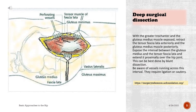Deep surgical dissection. With the greater trochanter and the gluteus medius muscle exposed, retract the tensor fasciae latae anteriorly and the gluteus medius muscle posteriorly. Expose the interval between the gluteus medius and the tensor fasciae latae and extend it proximally over the hip joint. This can be best done by blunt dissection. Be aware of vessels running across this interval — they require ligation or cautery.